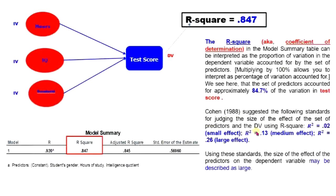Now let's see how we interpret R-square. The R-square value is 0.847. This is the coefficient of determination. We need to take a look at the independent variables to understand what this means.